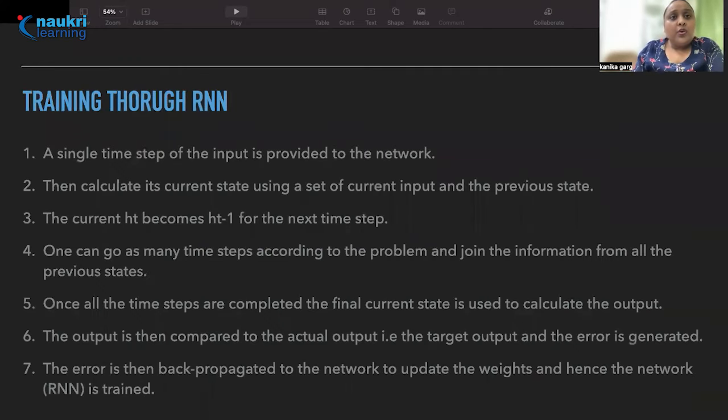Now comes how the training is done through RNN. The very first step is that a single time step of the input is provided to the network. What exactly is a time step? Time steps are nothing but the ticks of the time. It is how long in time each of your sample is going to take. For example, a sample can contain 128 timestamps where each time step could be a 30th of a second for audio processing or any signal processing. So it is exactly how long in time each sample is.